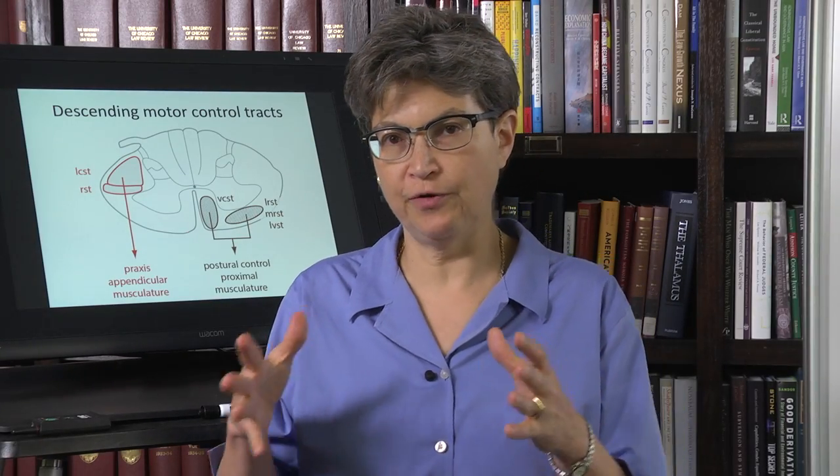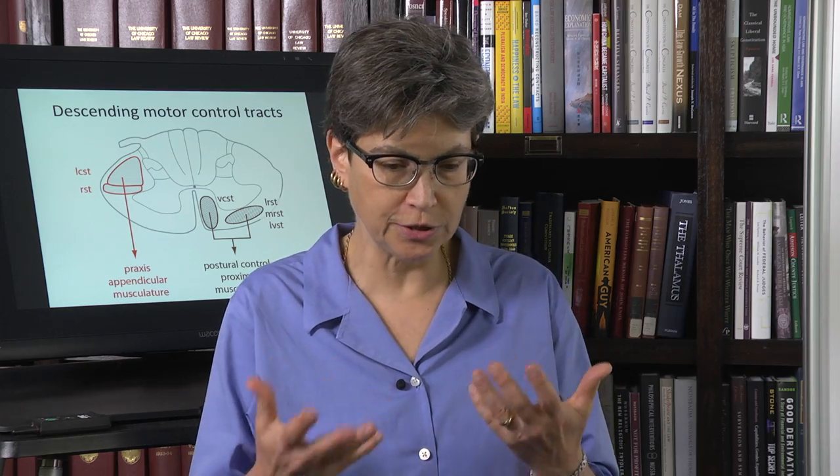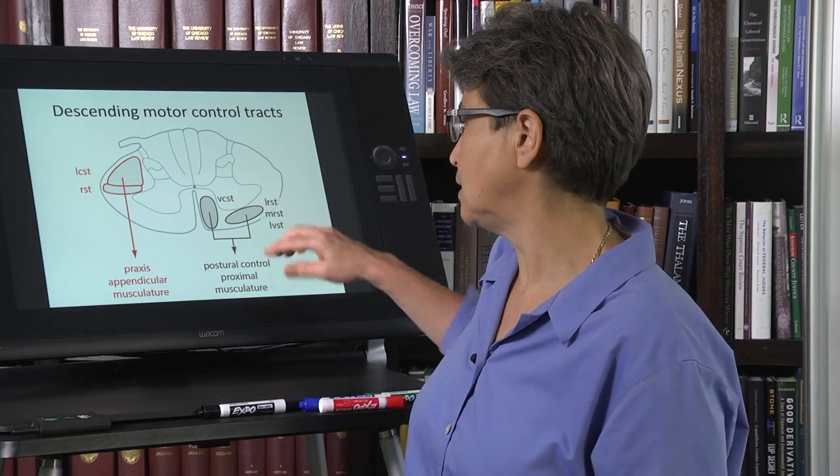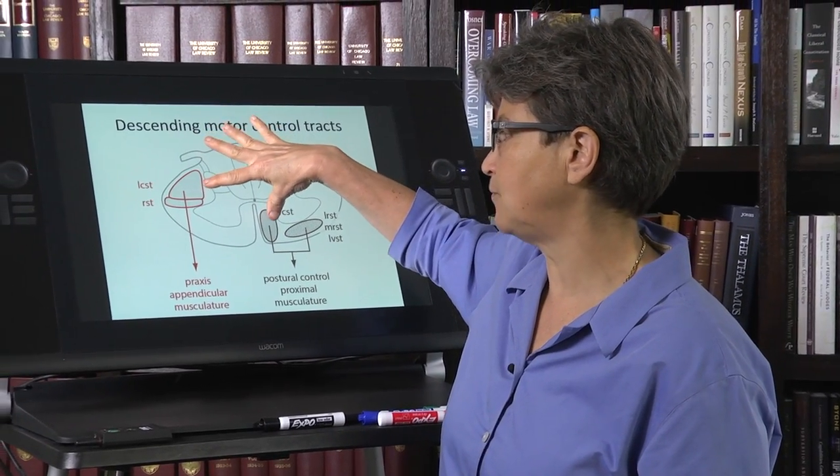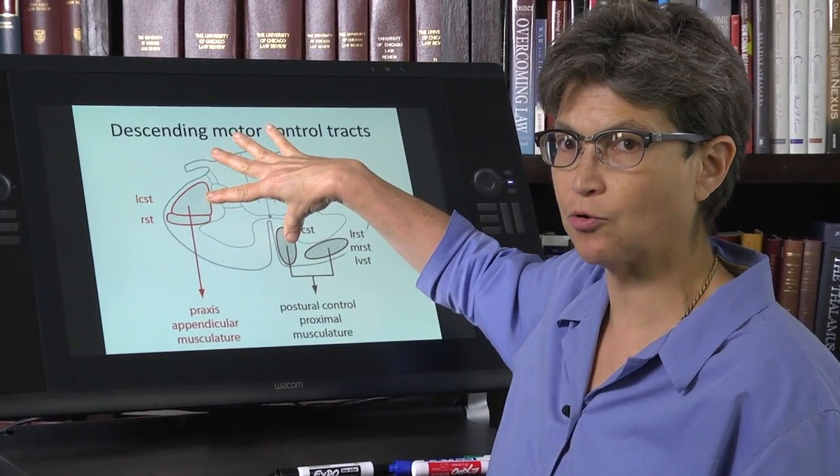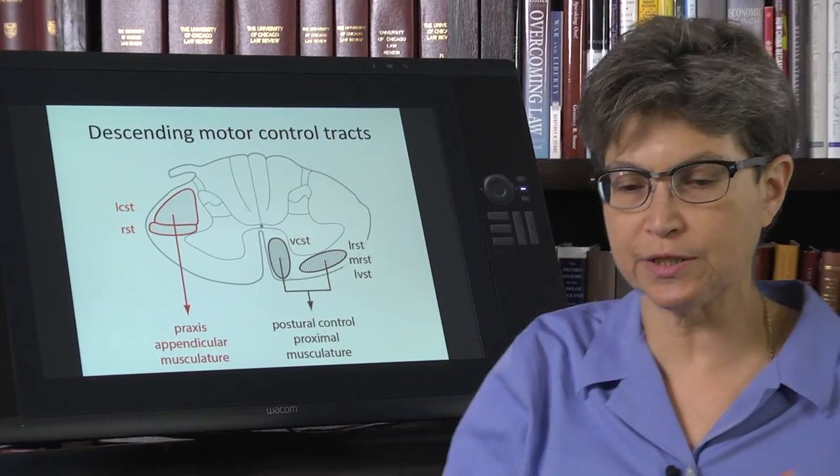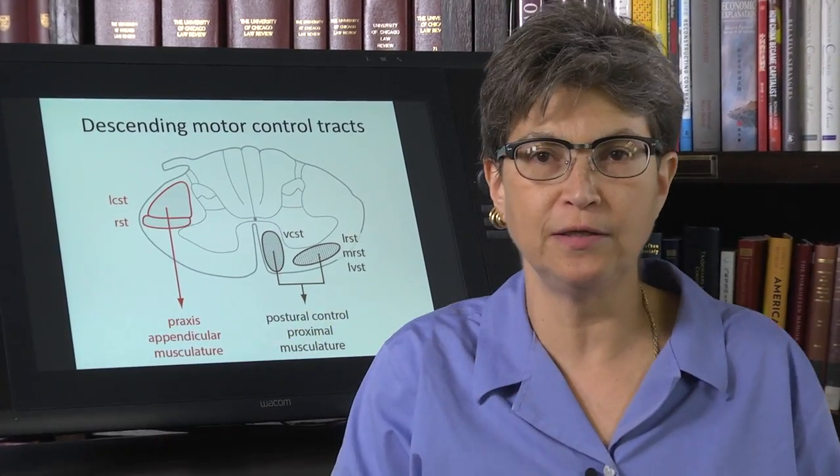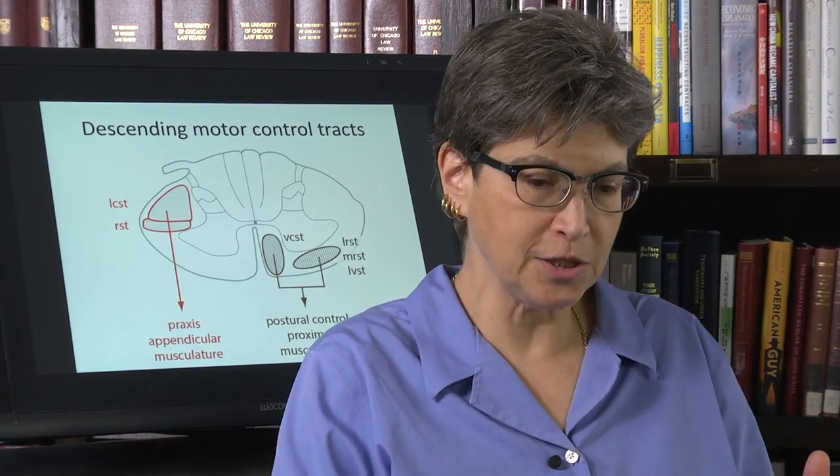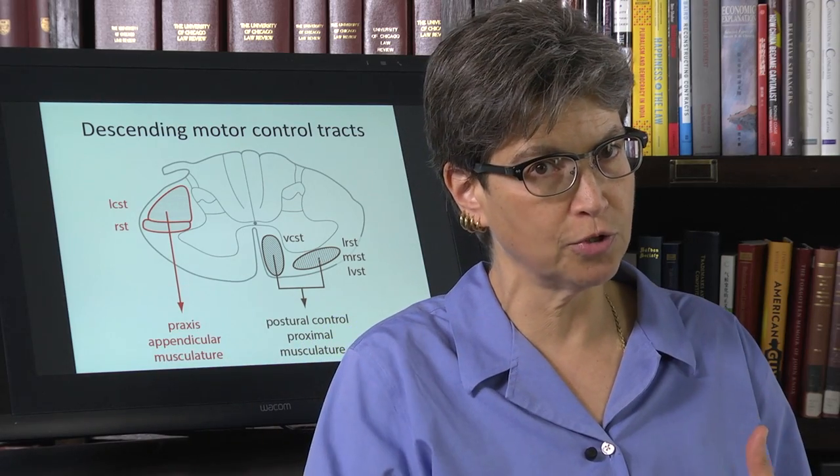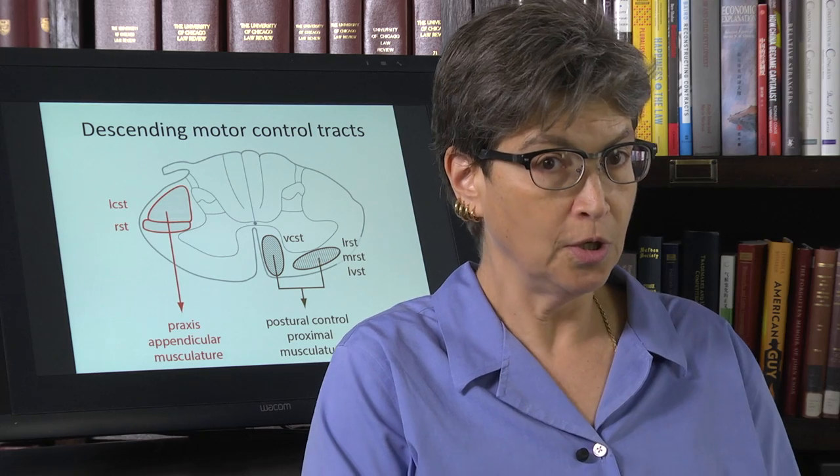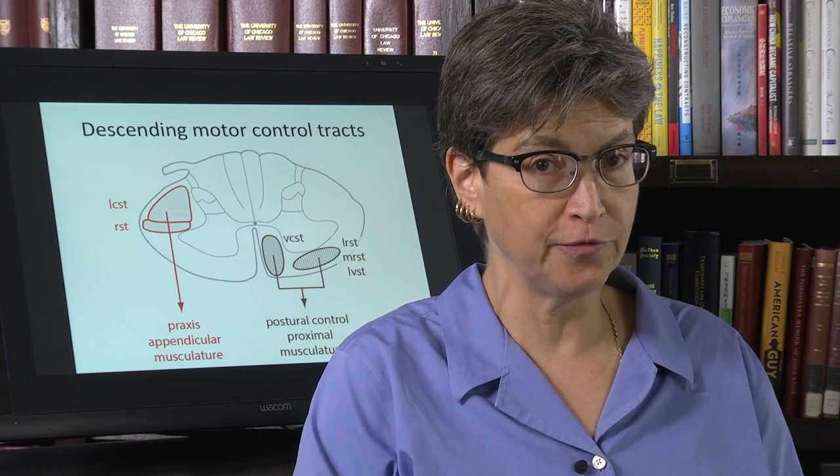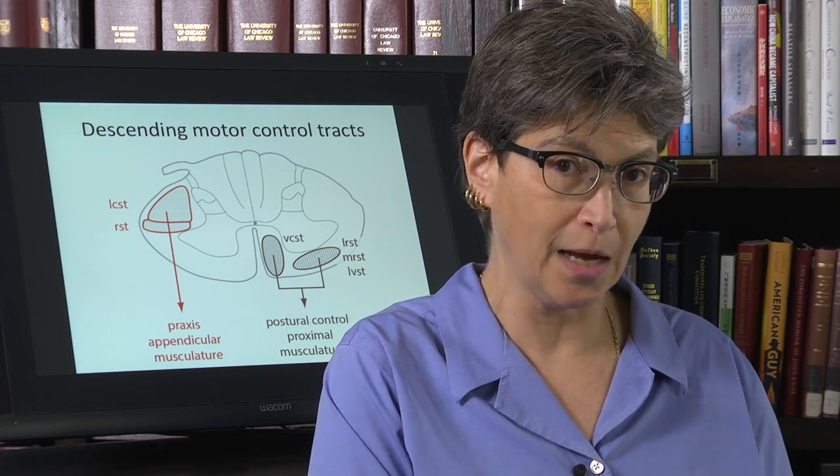So what tracks are actually involved in postural control? Well, I just talked about one, and that is the ventral corticospinal tract is going to be activated in concert with the lateral corticospinal tract. So the motor cortex says, go pull that lever. Well, the message to pull the lever goes to the lateral corticospinal tract, and the message to the ventral corticospinal tract is some clever way to make sure that when the lever gets pulled, the person doesn't fall back.